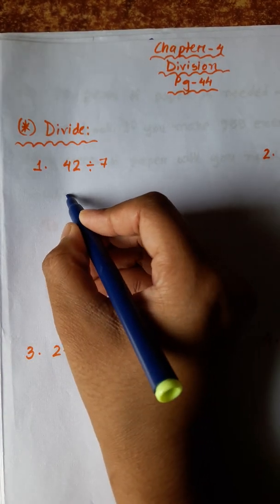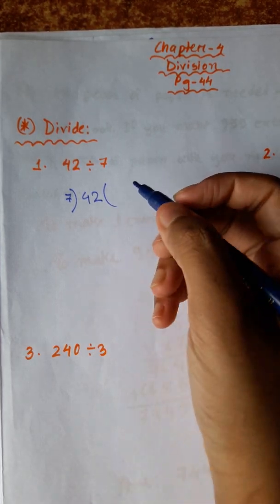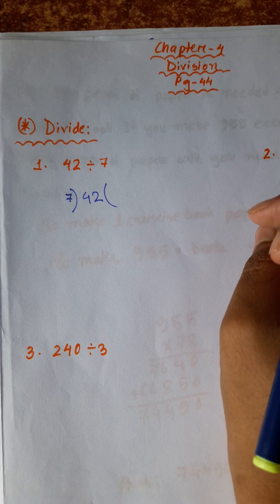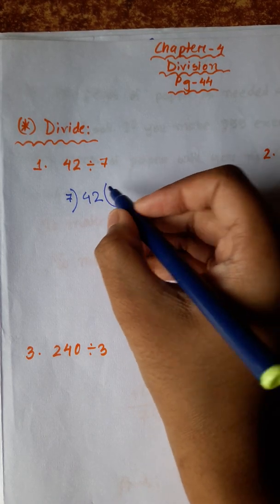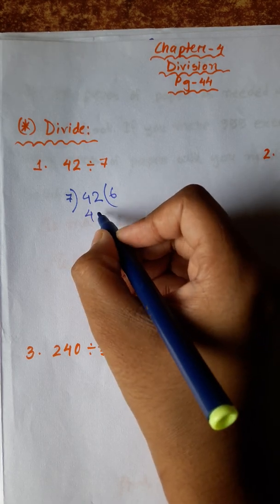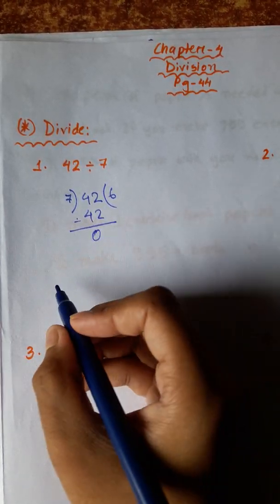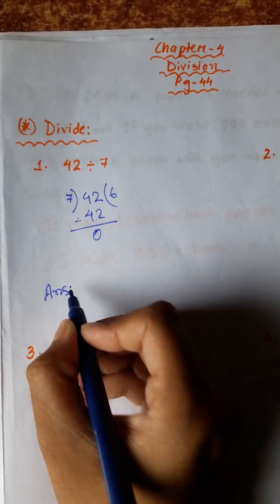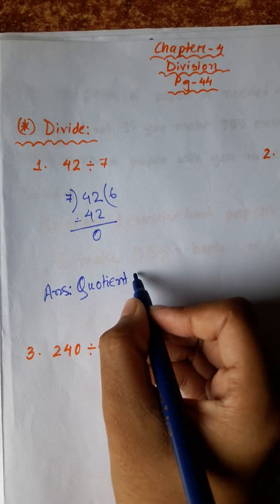42 divided by 7. So, 7 into 42. We know 7 ones are 7, 7 twos are 14, 7 threes are 21, 7 fours are 24, 7 fives are 35, 7 sixes are 42. 7 sixes are 42.